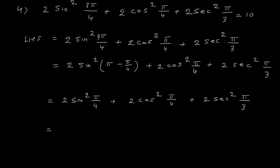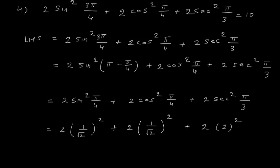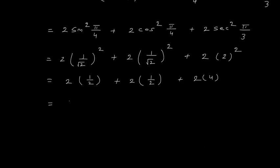Sin square pi by 4 means sin 45 degree, which is 1 upon root 2. So this is 2 into 1 upon root 2 the whole square, plus 2 into cos 45 — which is 1 upon root 2 — the whole square, plus 2 sec 60. Cos 60 is 1 by 2, so sec 60 is 2, meaning 2 times 2 square. Evaluating: 2 into 1 upon 2 is 1, plus 2 into 1 upon 2 is 1, plus 2 into 4 is 8. So I get 1 plus 1 plus 8 equals 10, which is the right hand side.